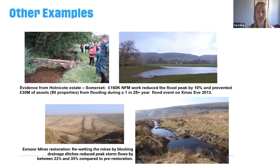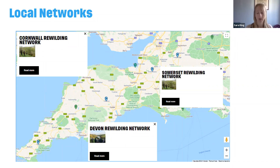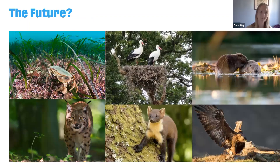We're developing local rewilding networks and groups as part of the network — a few are emerging in the southwest, including Cornwall, Devon and Somerset. These local networks are trying to coordinate rewilding at the local level, linking up to local nature recovery networks and strategies, landscape plans and other initiatives. We're excited about these local networks becoming established to help coordinate projects and campaign for local action going forward.